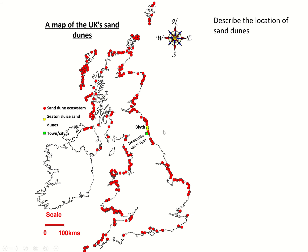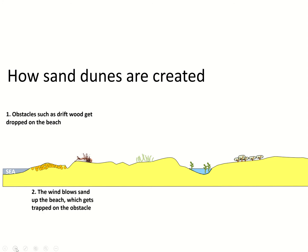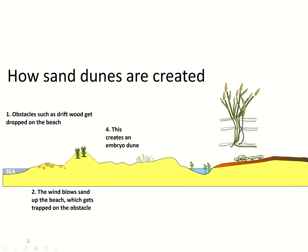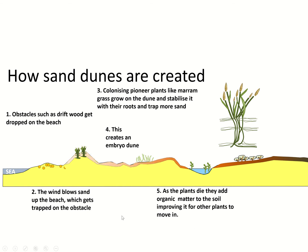The closest ones to me are up near Blythe, but we've got them all around the coastline of the UK depending on the coastal environment. They're created where we get obstacles like driftwood that get dropped onto a beach. When the wind blows, sand grains get blown up and accumulate around the obstacle, getting trapped there. That creates what we call an embryo dune, where colonizing pioneer plants like marram grass grow on that dune and stabilize it with their roots to trap more sand. As the plants die, they add organic matter to the soil, improving it for other plants to live.